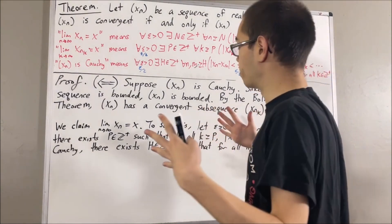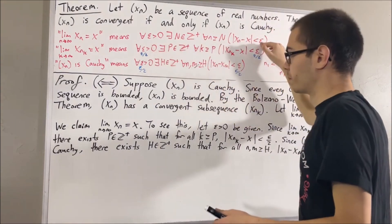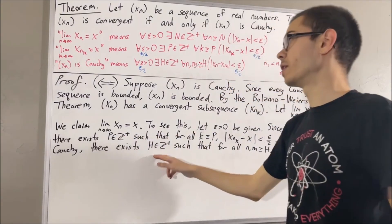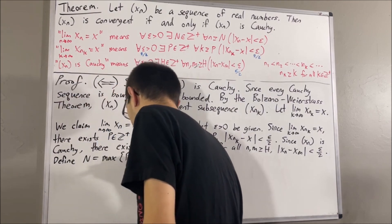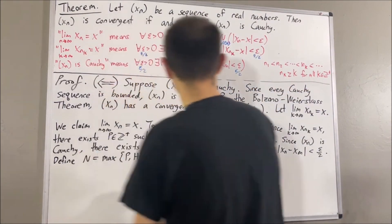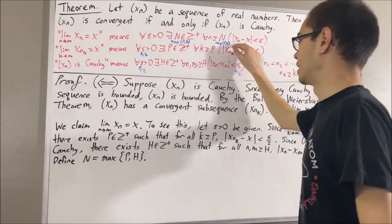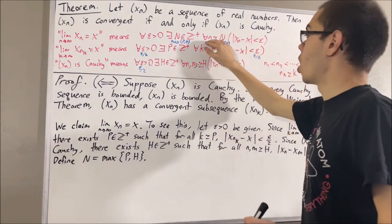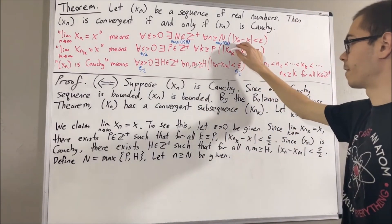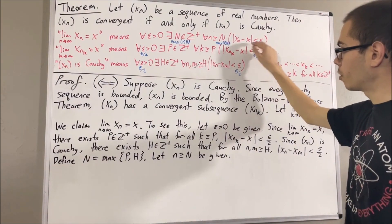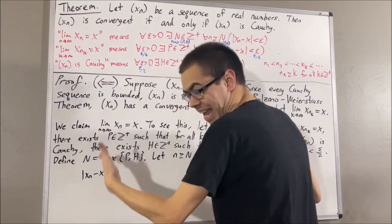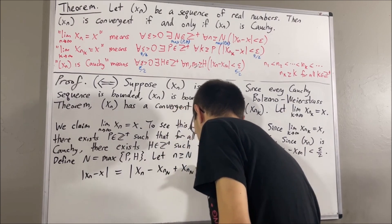The whole goal has been to find a positive integer capital N such that this statement is true. The claim is that if we take capital N to be the maximum of p and h, then that choice of capital N will work. So taking capital N to be the maximum of p and h, we proceed to show: for all n greater than or equal to capital N, the absolute value of xn minus x is less than epsilon. Since we're proving a statement about all n greater than or equal to capital N, let's give ourselves an arbitrary n greater than or equal to capital N. Now we want to show that the absolute value of xn minus x is less than epsilon.